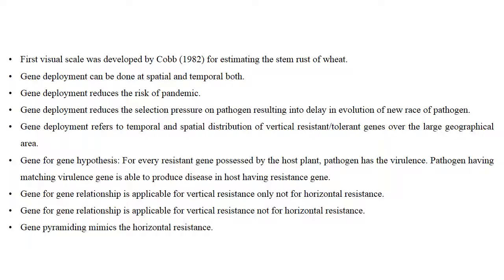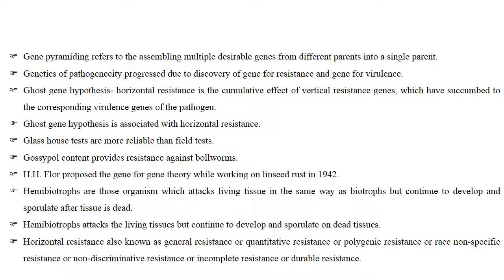Gene pyramiding mimics horizontal resistance. Gene pyramiding refers to the assembling of multiple desirable genes from different parents into a single genotype. The genetics of pathogenicity progressed due to the discovery of genes for resistance and genes for virulence.